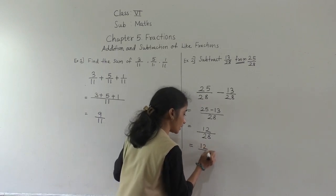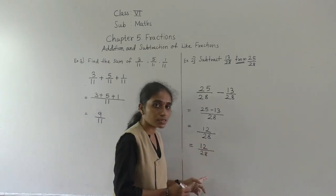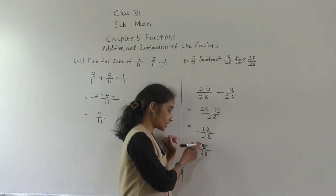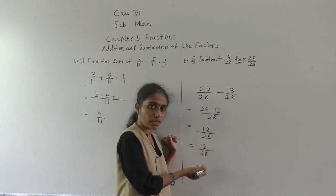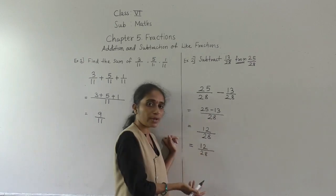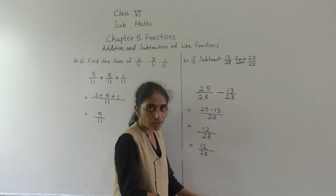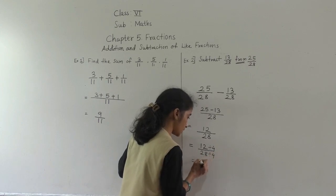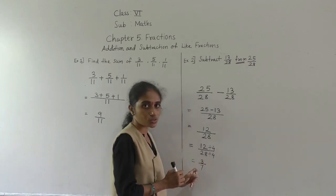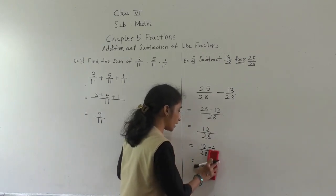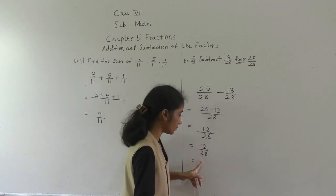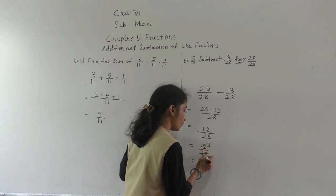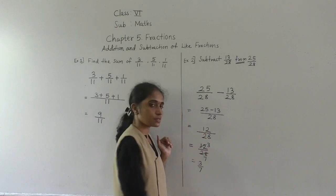So 12 upon 28 — both numbers appear in the 4 times table: 4 threes are 12, and 4 sevens are 28. So we divide by 4. 12 divided by 4 is 3, and 28 divided by 4 is 7. The answer in simplest form is 3 upon 7.